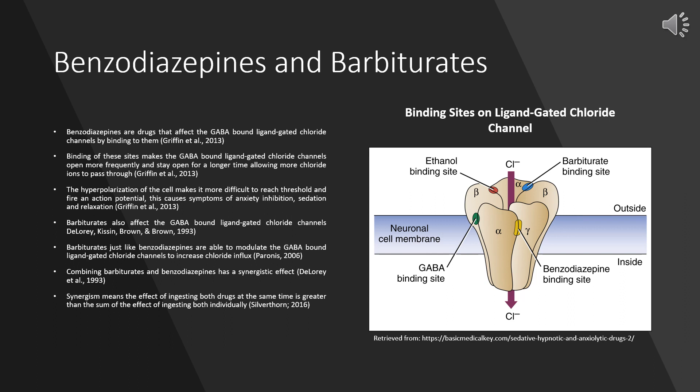Now that you have a better understanding of GABA's effect on nerve cells in the central nervous system, you are capable of understanding how drugs such as benzodiazepines and barbiturates can alter homeostasis. Benzodiazepines such as Valium affect the GABA-gated ligand-gated chloride channels seen to the right. Benzodiazepines can bind to these channels due to the availability of benzodiazepine binding sites, seen in yellow. Binding at these sites makes the GABA-gated ligand-gated chloride channels open more frequently and stay open for a longer time, allowing more chloride ions to pass through.